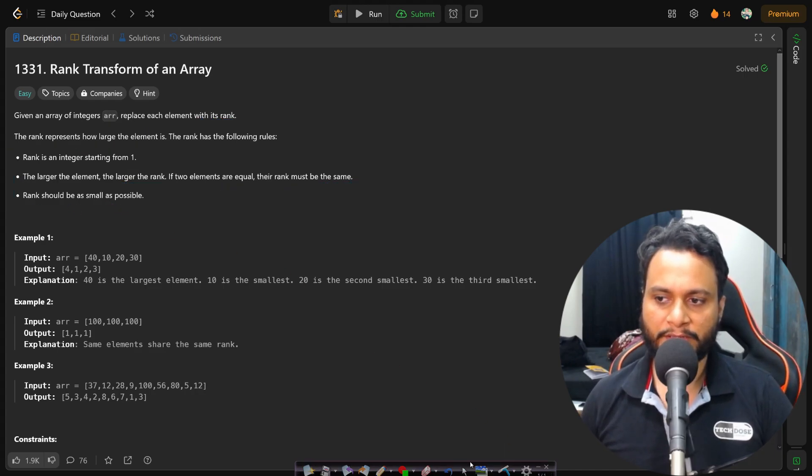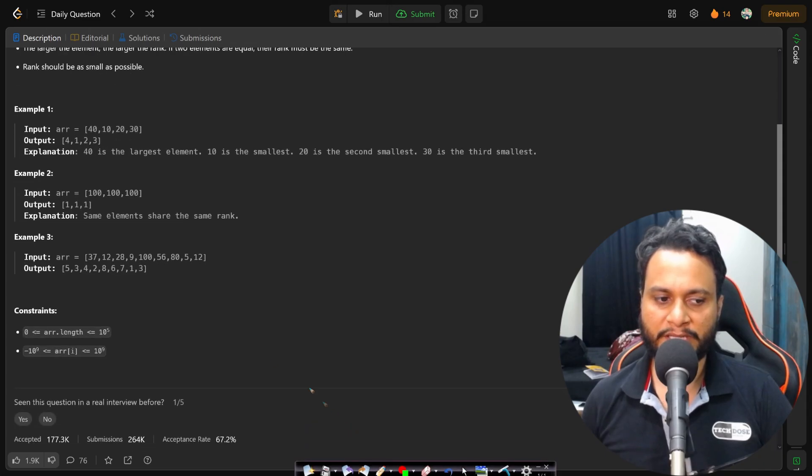If you look at the constraints, the numbers can be negative as well as positive and the number of items are 10 to the power of 5. So if you want to get the problem submitted within one second, then you can take an N log N solution for this.